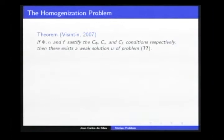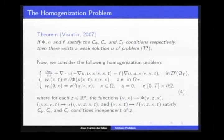With this notion of weak solution, we have existence of a weak solution. But we don't have the uniqueness property unless one of the functions phi or alpha is linear in the first argument, in which case we have uniqueness. Our main concern in this talk is the following homogenization problem.